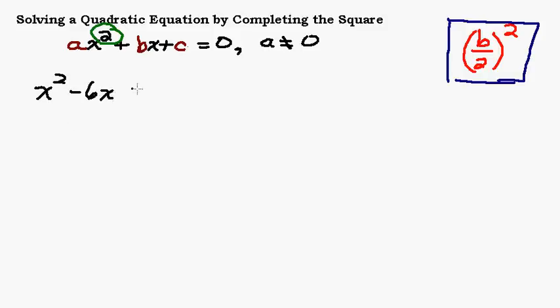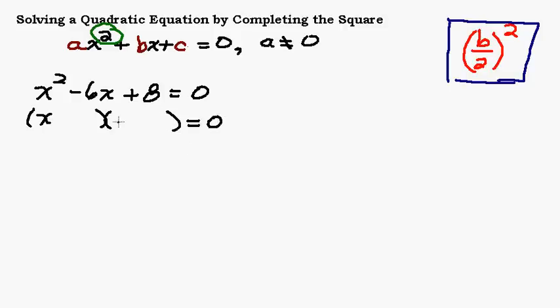x squared minus 6x plus 8 equals 0. This is a good example to look at because in the last video I talked about how when you're solving a quadratic equation, the main way you're going to do it is to either factor or use the quadratic formula. This problem right here actually factors. The quickest way to solve this quadratic is to factor it. The last example we did in the completing the square video didn't factor. We know there is something that multiplies to be positive 8 and adds to be negative 6 — that would be negative 4 and negative 2. So if you can factor it, this is going to be the easiest way.